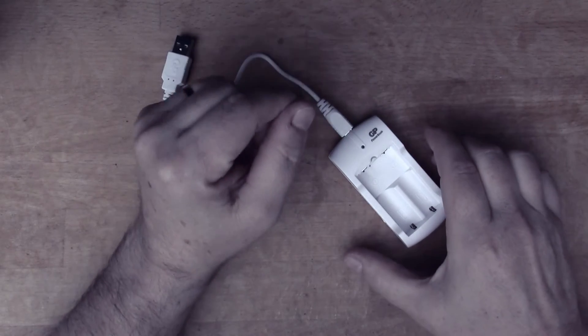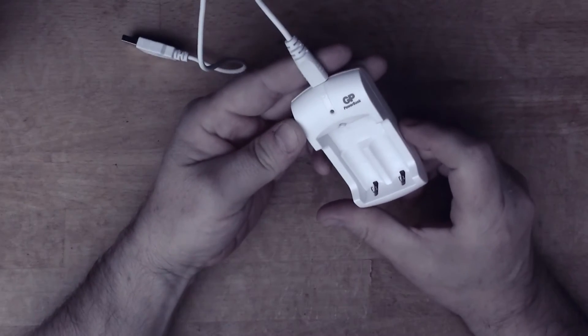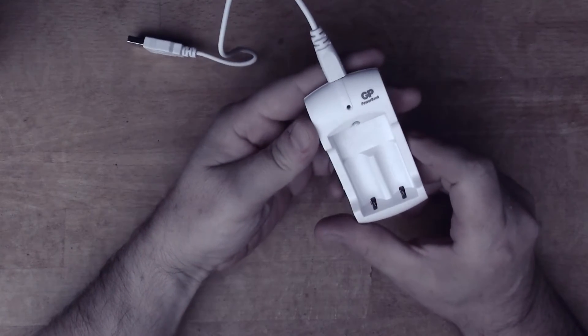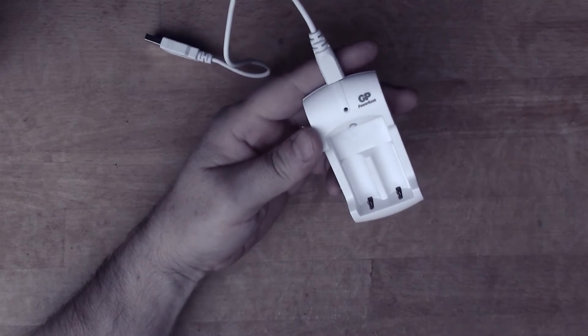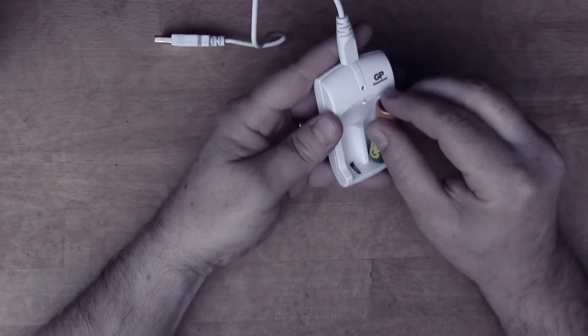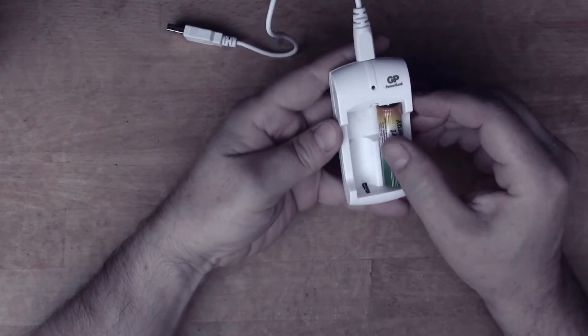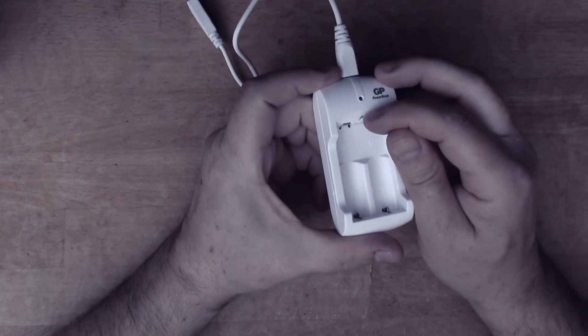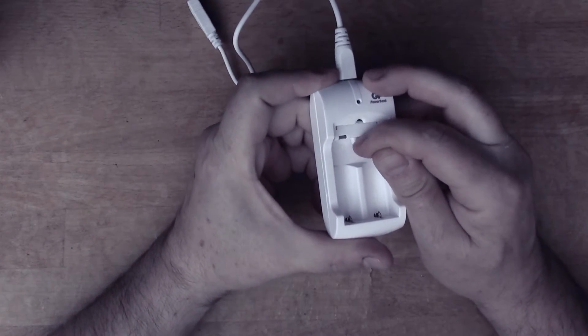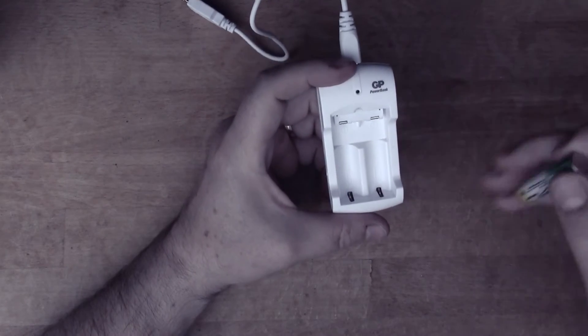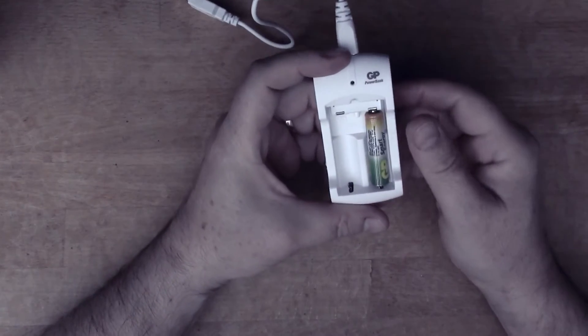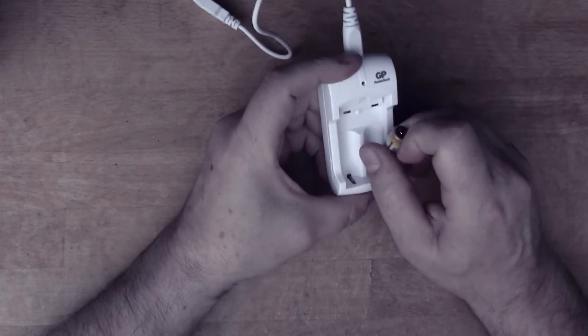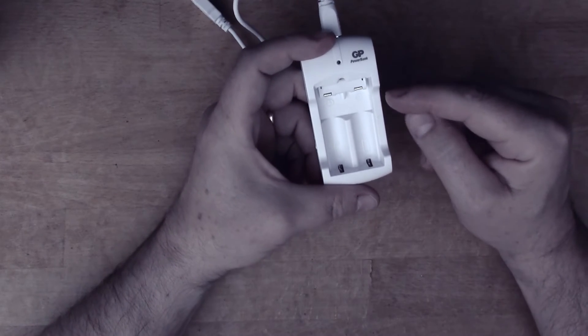One thing I should show you is the mechanism for switching between AA and AAA cells. In the normal setting, this thing is set up for the AA cells, but look, there's this little door here that you can flip down, and then it becomes possible to put AAA cells in here as well. Actually, on the circuit board underneath,